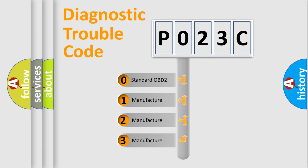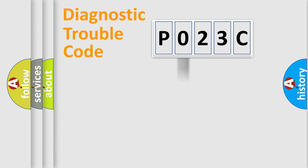If the second character is expressed as 0, it is a standardized error. In the case of numbers 1, 2, 3, it is a manufacturer-specific expression of the car-specific error.